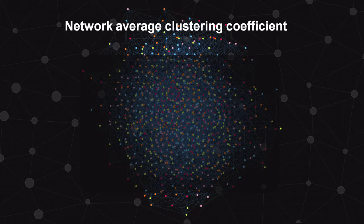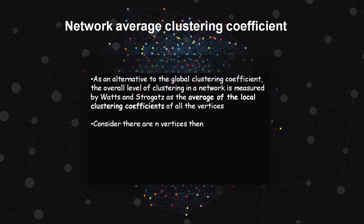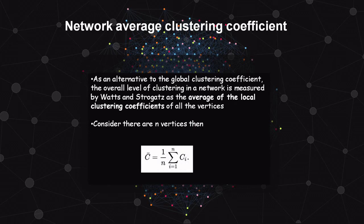Network average clustering coefficient is an alternative to global clustering coefficient for measuring the overall clustering level of a network. For a network with n vertices, it is computed as the average of the local clustering coefficients Ci over all n nodes.